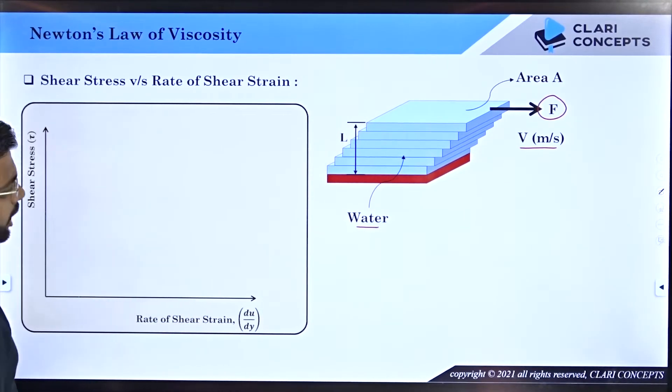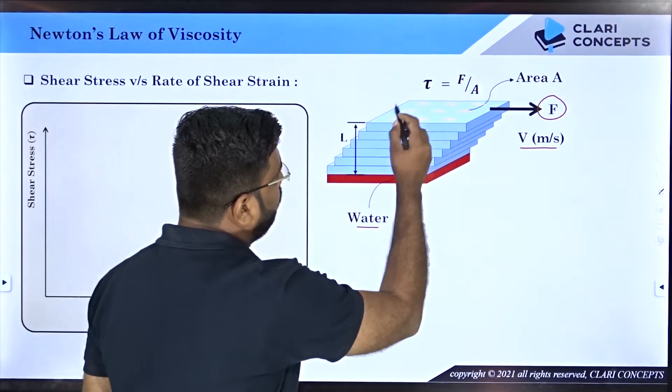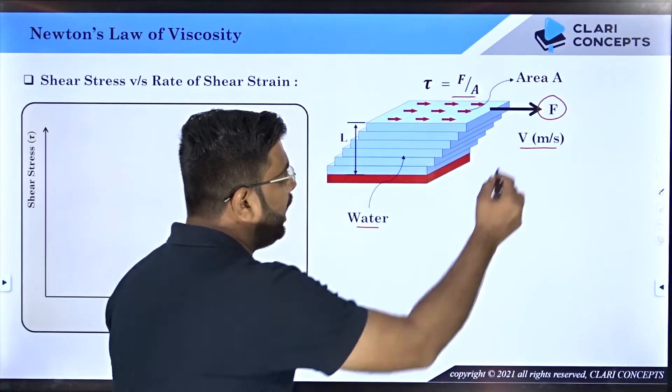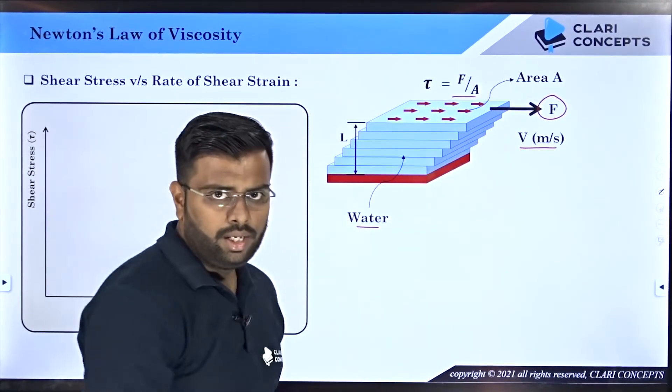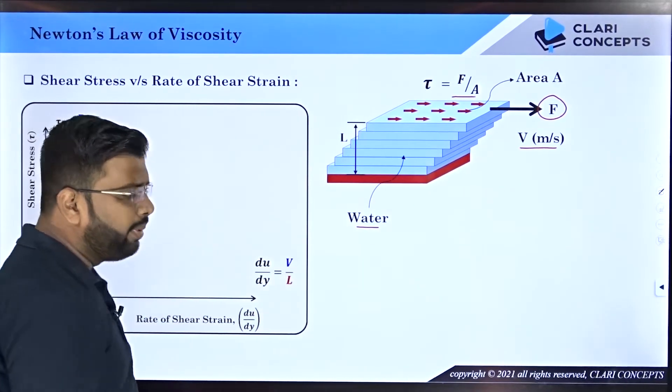Now for one particular case, I will denote that the shear stress tau on the topmost layer is nothing but the ratio of the shear force that you apply, F, divided by the area A.